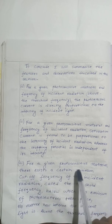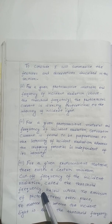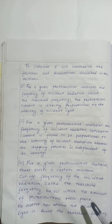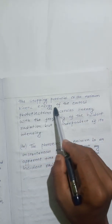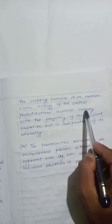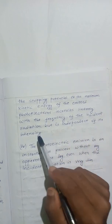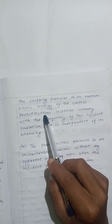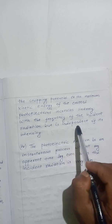For a given photosensitive material, there exists a certain minimum frequency of the incident radiation called the threshold frequency, below which no emission of photoelectrons takes place, no matter how intense the incident light is. For a given photosensitive material and frequency of incident radiation above the threshold frequency, the stopping potential or the maximum kinetic energy of the emitted photoelectrons increases linearly with the frequency of the incident radiation, but is independent of its intensity.